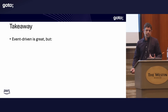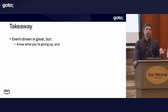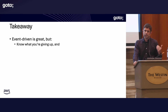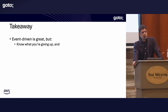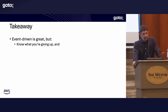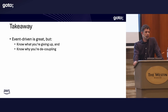My big takeaway on event-driven applications: it's really great, but understand what you're giving up. James Easton did a good talk about observability in event-driven applications being much harder than with synchronous or intentful asynchronous applications — you really need to think about how you're observing things, knowing who's using your events. Also know why and what you're decoupling, because you may have to deal with trade-offs elsewhere in your application and team.